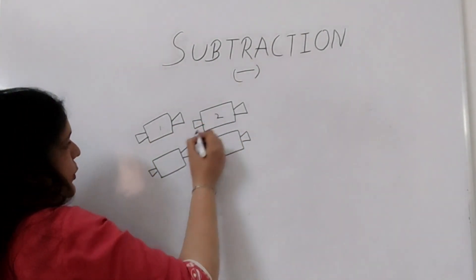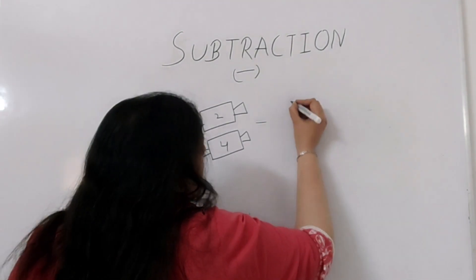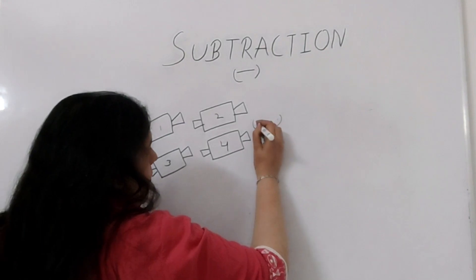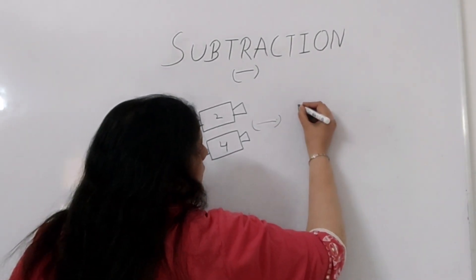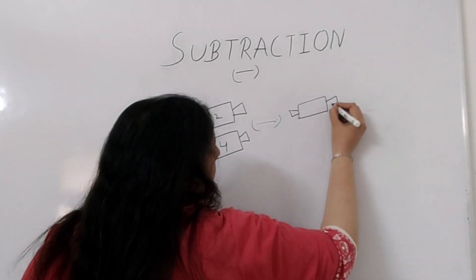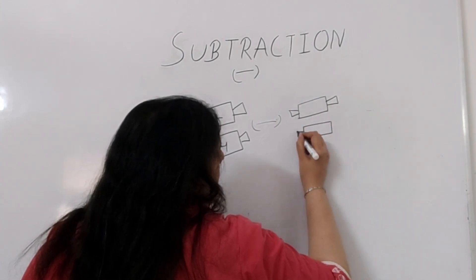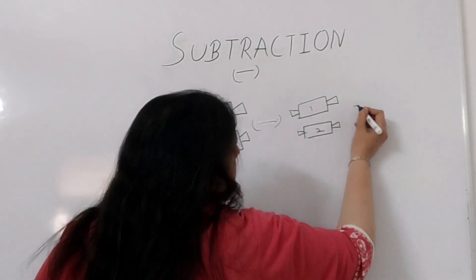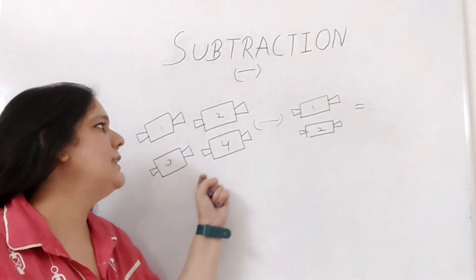Let us take one more example. I have these one, two, three, four toffees here. This is the minus sign. I have two toffees here. What will be the answer? I want this subtraction — this minus this.